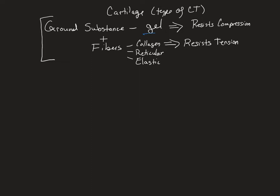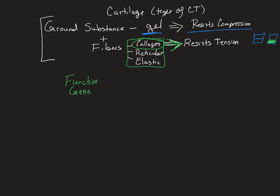With cartilage, we move to a gel-like consistency, which is going to let you resist tension. Imagine a cup with liquid — if you step on it, the liquid splashes everywhere. But if instead you have solidified jello, when you step on it, the jello is going to spring back and resist the compression. The collagen fibers give the other component to the function, which is resisting compression. So the generic function of cartilage is to resist tension and compression.